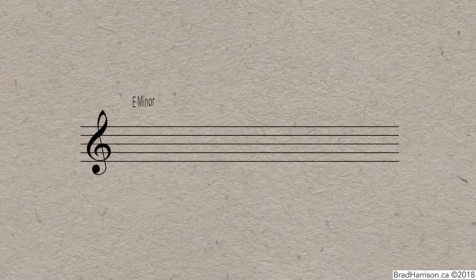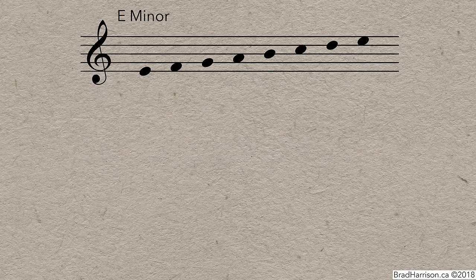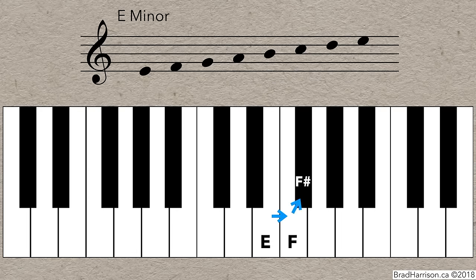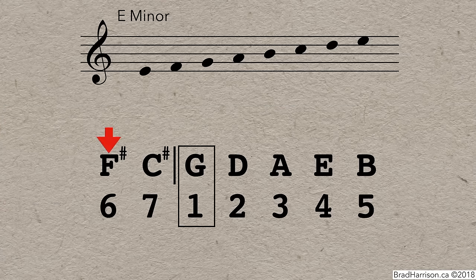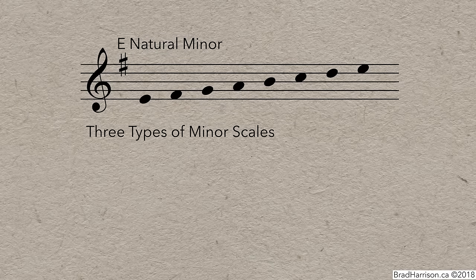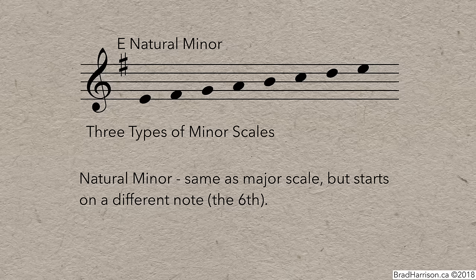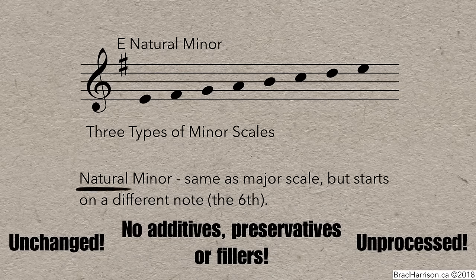To write a minor scale, start with the root and write eight notes — one on each successive line or space, ending on the same note you started. You need to know what key signature to use, so find the relative major. Three semitones above E is G, and the key signature for G major is one sharp, F sharp. Add in the key signature, and that's an E minor scale. This is called the natural minor scale — the easiest to remember and write, because it's the same as the major scale but starts on a different note, the sixth, which is three semitones down. It's unchanged, unprocessed — no additives, preservatives, or fillers.